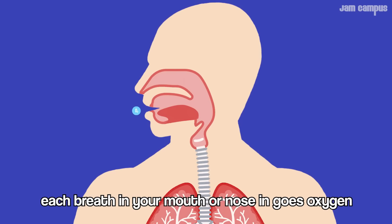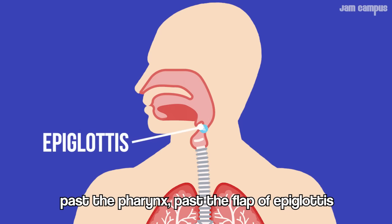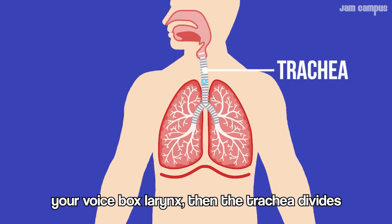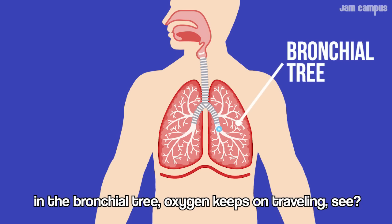Each breath in your mouth and nose, in goes oxygen past the pharynx, past the flap of the epiglottis. Your voice box larynx, then the trachea divides, and air enters the lungs in the primary bronchi, in the bronchial tree.